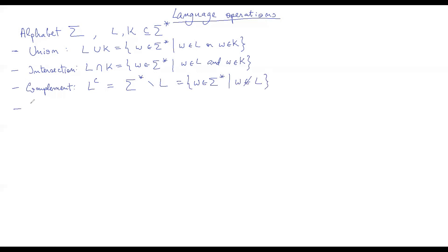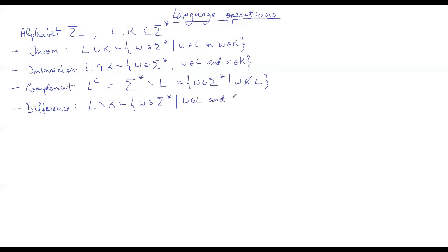We also have the difference between two languages, defined as the set difference. L minus K is all the words W in sigma star such that W is in L and W is not in K.